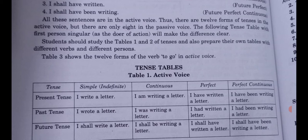In present perfect tense we use has or have plus the third form of the verb. Example: I have written a letter. For present perfect continuous: has or have plus been plus V1 plus -ing. Example: I have been writing a letter. In simple past tense, whether the subject is singular or plural, we use the second form of the verb.